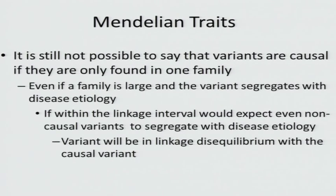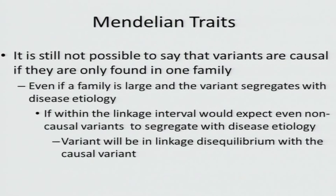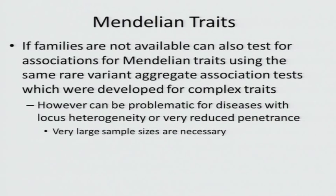However, we still have the same problem: what happens if we only see that variant in a single family? That's still not proof that the variant is involved in the disease etiology. And if you know the region of linkage, it's not surprising at all that the variant segregates with the disease within the family—it's going to be on the same haplotype with the disease variant. So of course it's going to segregate; that's not really evidence that the variant is involved in disease etiology.